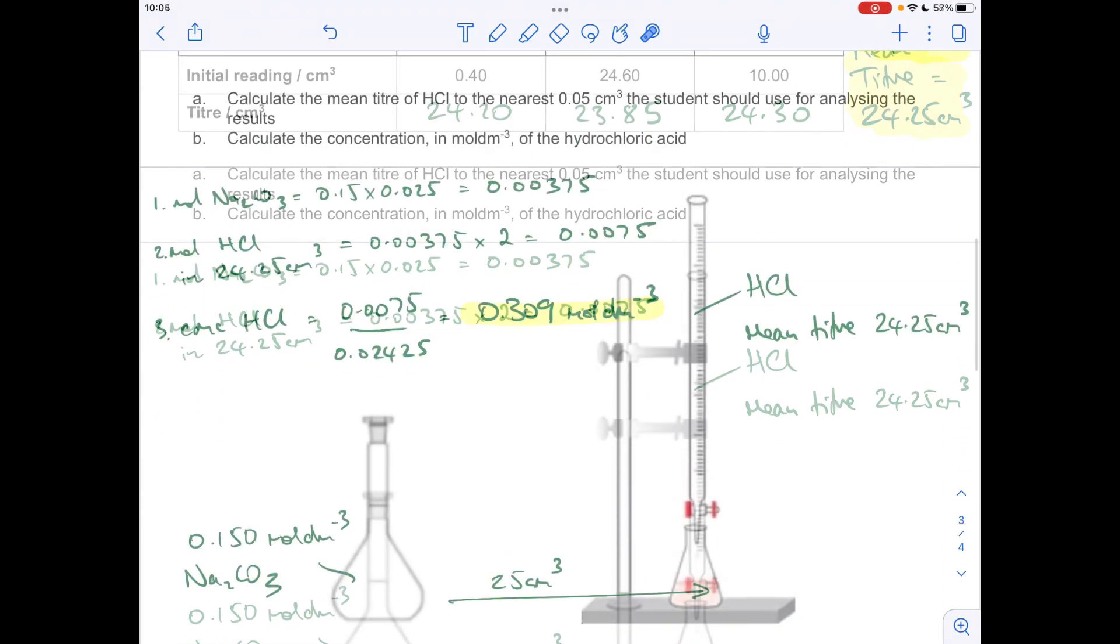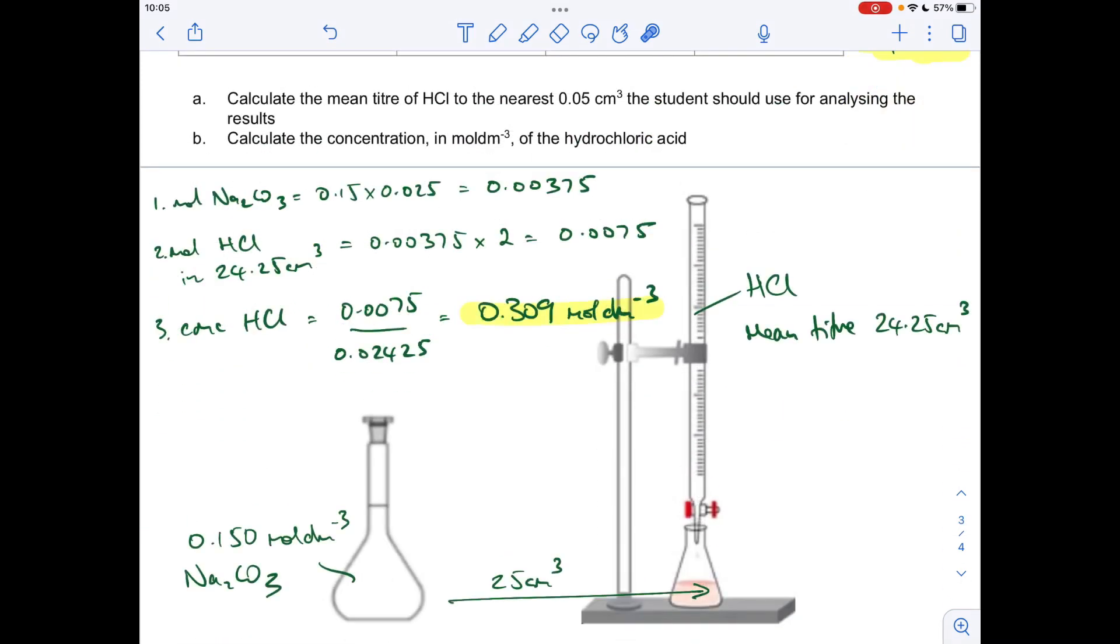The final thing we'll do is work out the concentration of the HCl: moles divided by the volume. Remember, the volume's got to be in decimeters cubed, and that's coming out to three significant figures at 0.309 moles per decimeter cubed.